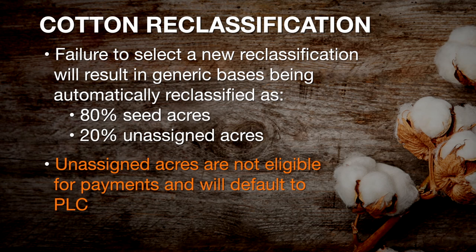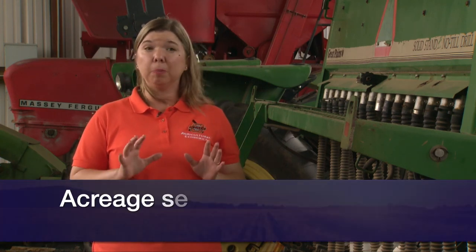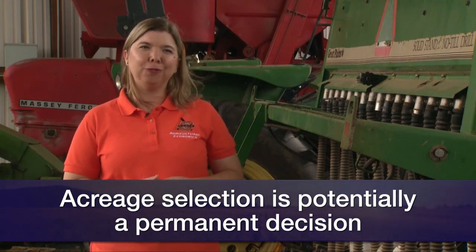So if they'd like to make a choice between ARC and PLC, and have a choice of how those acres are broken up, now is the time to act. They have until September 28th to make the first contact with their county FSA office to start determining how they're going to roll over those generic acres, but they have until December 7th to sign their contracts. Producers need to assume that whatever choice they make in terms of breaking up their acreage is going to be a permanent decision. Once we have a 2018 Farm Bill, we'll know more if they'd be able to make adjustments in their base acres.